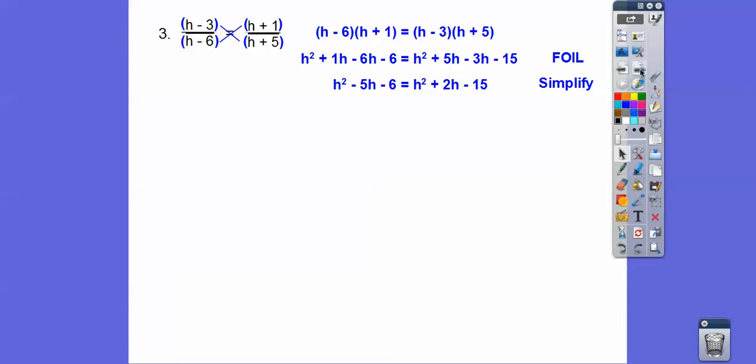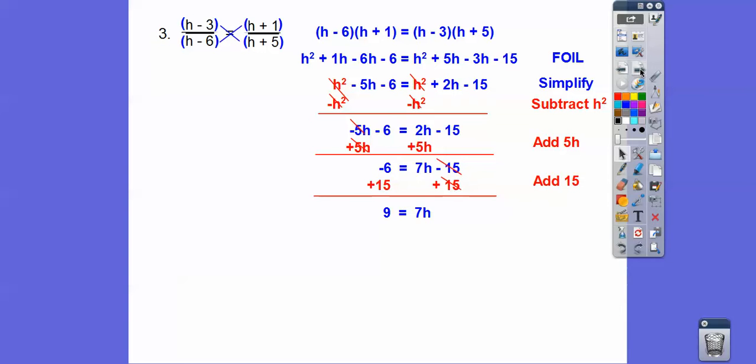Now I'm going to go ahead and subtract h squared from both sides and clean that up. And then we'll go ahead and add 5h to both sides. And then we're going to go ahead. We need to solve for h. So h is over here now. So I'm going to add 15 to both sides. And so we get 9 equals 7h. And then divide by 7. And we get h equals 9 sevenths. And that's okay. Fractions are okay.